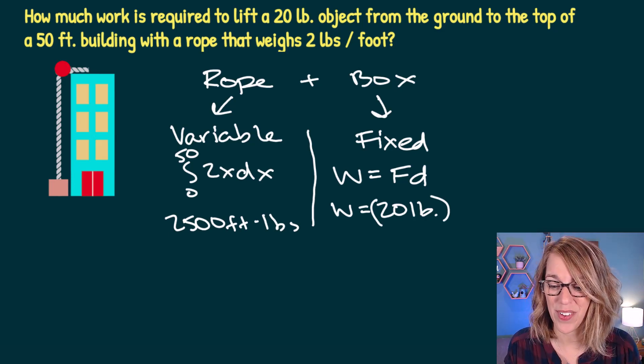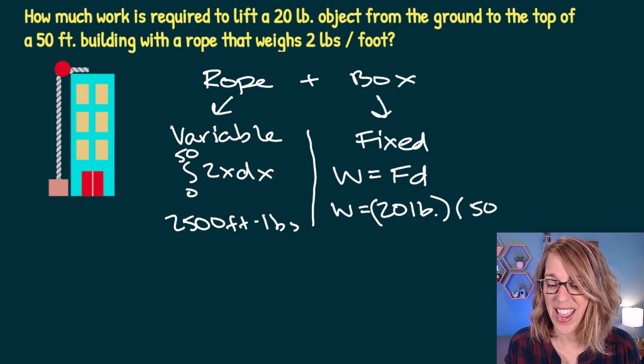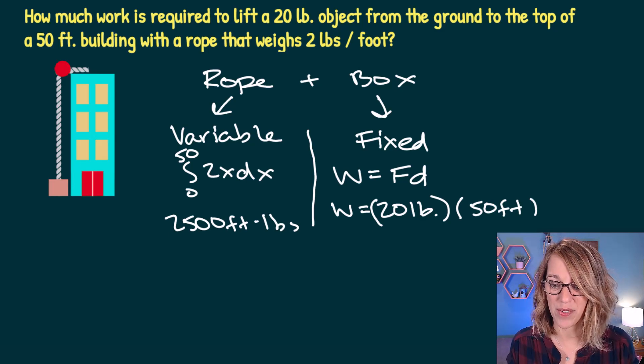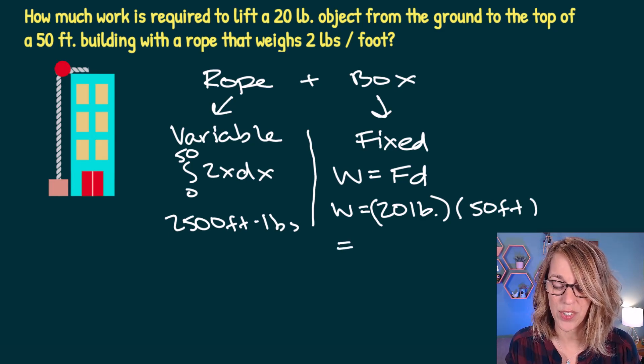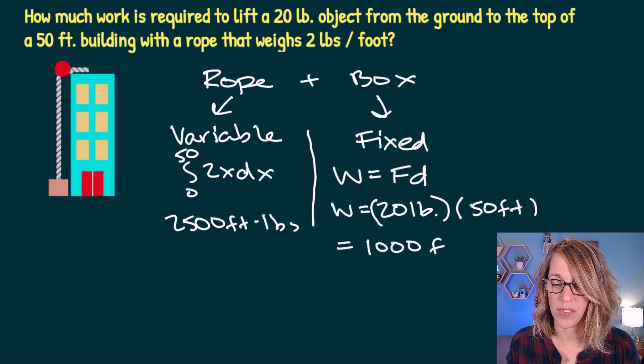So I am going to end up with the correct units of foot-pounds. 50 times 20 is equal to 1,000 foot-pounds.